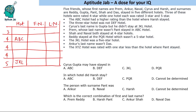If ABC has a higher rating than where Harsh stayed, that means Harsh stayed in a three-star hotel. We do not know the name of the hotel, but we know Harsh stayed in a three-star hotel. Cyrus's last name is Gupta, but he didn't stay at the JKL hotel, so Cyrus Gupta cannot stay in a five-star hotel.